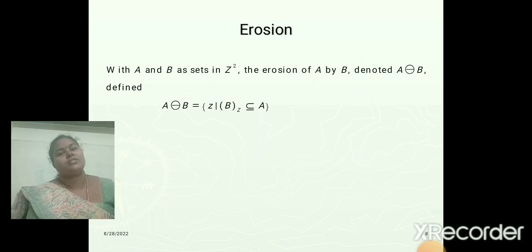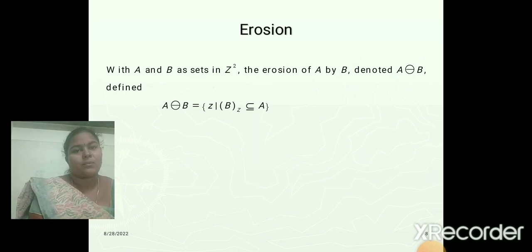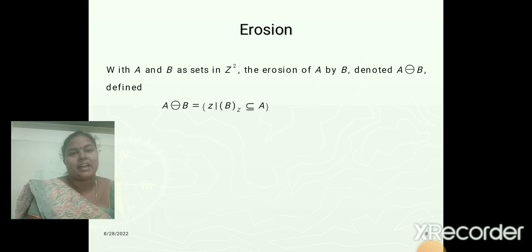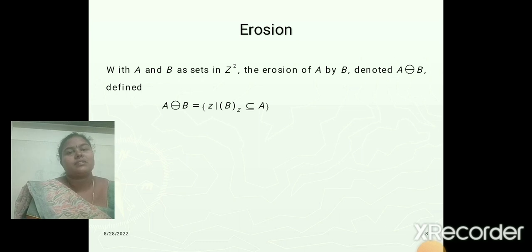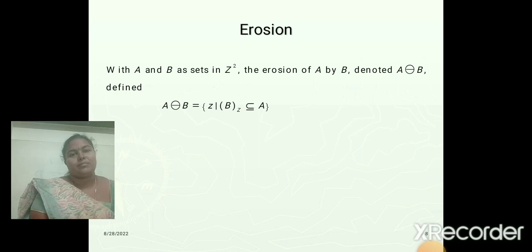There are four operations present in morphological operations: erosion, dilation, opening, and closing. With A and B as sets in Z-square, the erosion of A by B is denoted by a small circle with a minus symbol inside. This is the symbolic representation of the erosion function — A eroded by B is equal to...